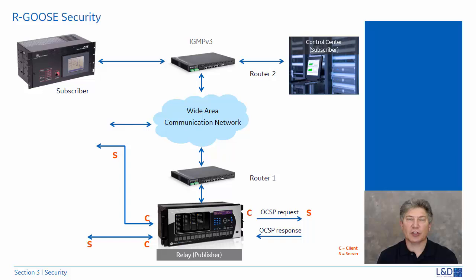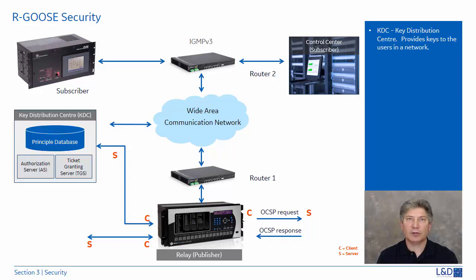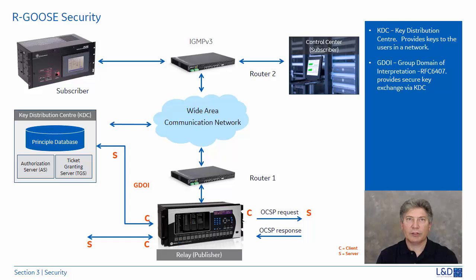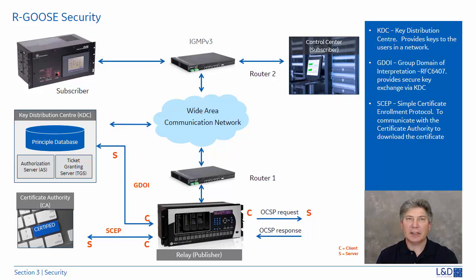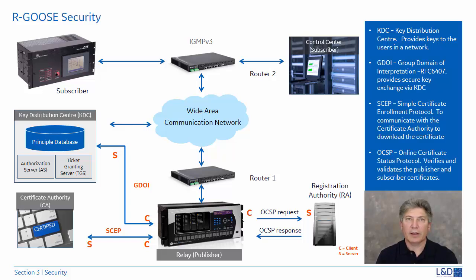In this section, we will review all the components used in a secure routable message configuration. First, we have a Key Distribution Center, or KDC — a system responsible for providing keys to users in a network that shares sensitive or private data. Each time a connection is established between two devices, they both request the KDC to generate a unique password for verification. The protocol used to access the KDC is known as GDOI, the Group Domain of Interpretation, which provides a secure key exchange between the KDC and the devices. SCEP, the Simple Certificate Enrollment Protocol, is used to communicate with the certificate authority responsible for issuing and managing certificates. Finally, OCSP, the Online Certificate Status Protocol, is used to communicate with the registration authority to verify and validate the publisher and subscriber certificates.